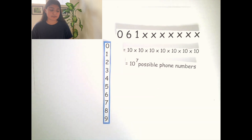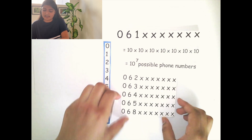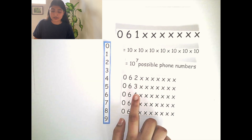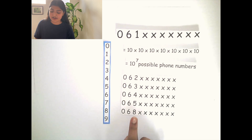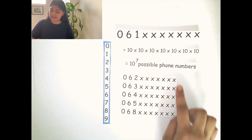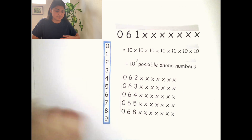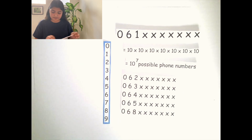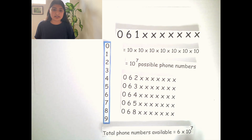However, it's important to remember there are other ways to start a phone number: 062, 063, 064, 065, and 068. Since there are 6 different ways to start a phone number, and each has 10 to the power of 7 possible phone numbers, the total possible phone numbers available would be 6 times 10 raised to the power of 7.